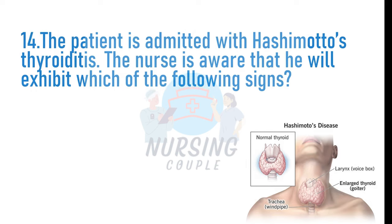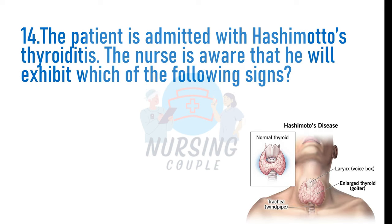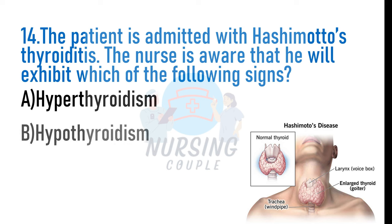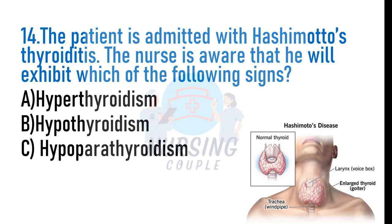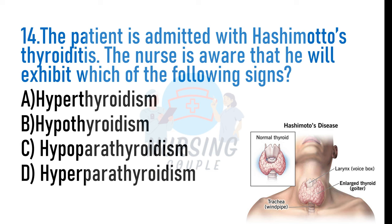The patient is admitted with Hashimoto's thyroiditis. The nurse is aware that he will exhibit which of the following signs? A. Hyperthyroidism, B. Hypothyroidism, C. Hypoparathyroidism, D. Hyperparathyroidism. The answer is B: Hypothyroidism. Hashimoto's thyroiditis is an autoimmune disease where the body makes antibodies that attack cells in the thyroid gland. Initially, inflammation causes leakage of thyroid hormones leading to hyperthyroidism; over time, inflammation prevents adequate hormone production, leading to hypothyroidism.